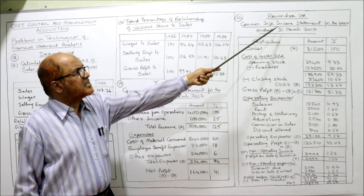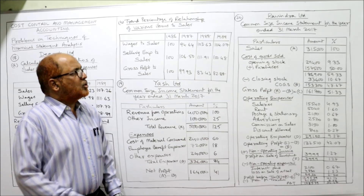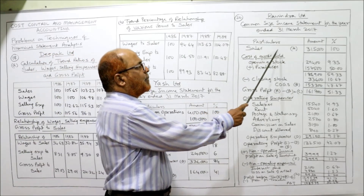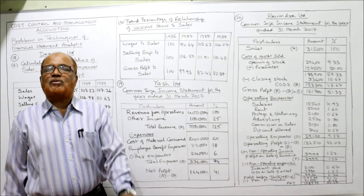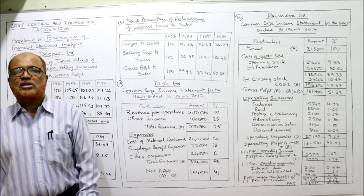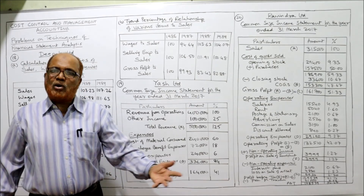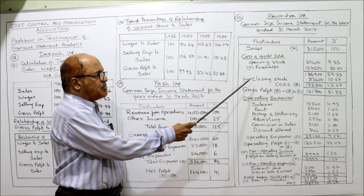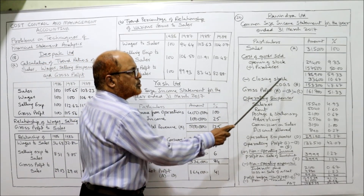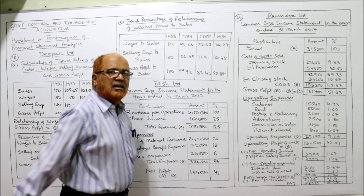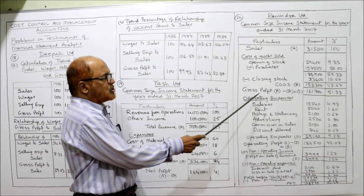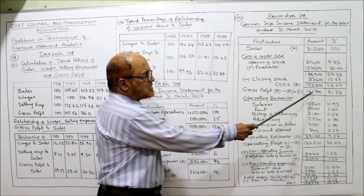Common size income statement for the year ended 31st March. Sales are 3,15,000. Cost of goods sold is calculated as: opening stock plus purchases minus closing stock, giving 1,53,300. Sales minus cost of goods sold gives gross profit of 1,61,300. From gross profit we deduct operating expenses — salaries, rent, postage and stationery, advertising, commission, discount — total operating expenses are 29,190. Gross profit minus operating expenses gives operating profit of 1,32,510.